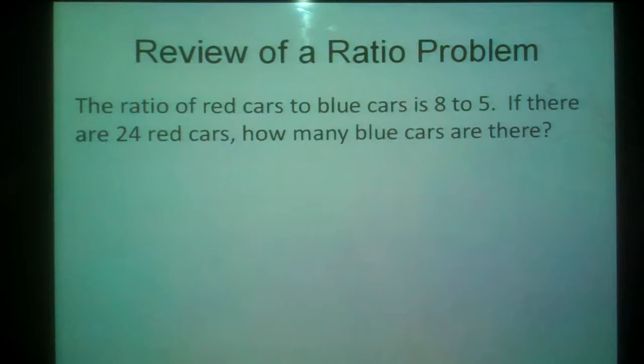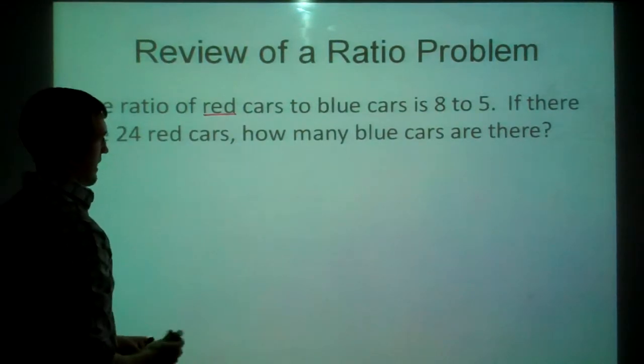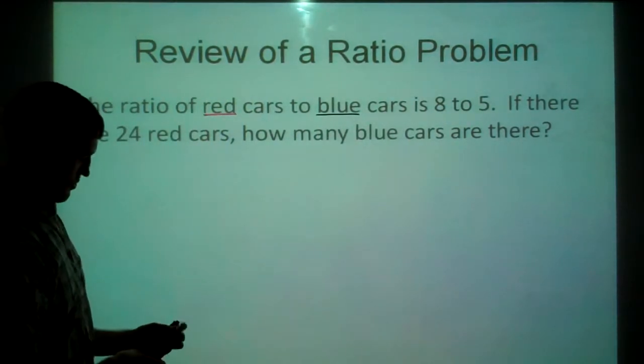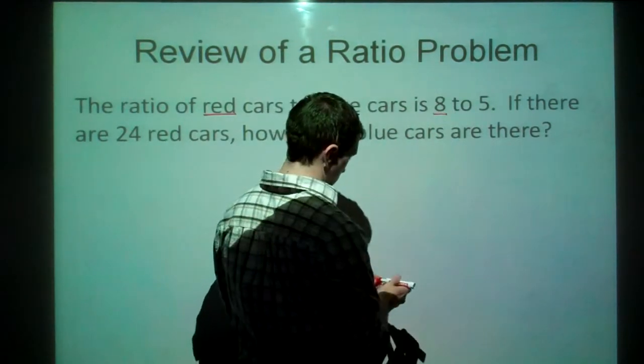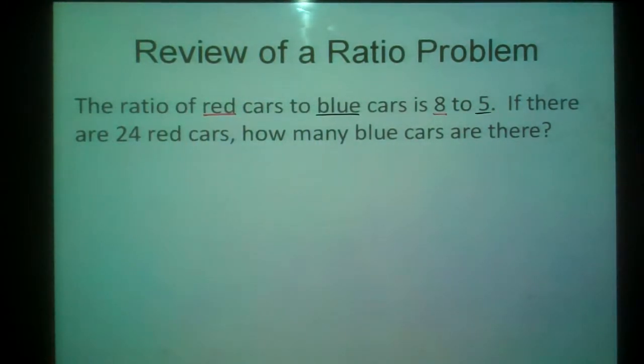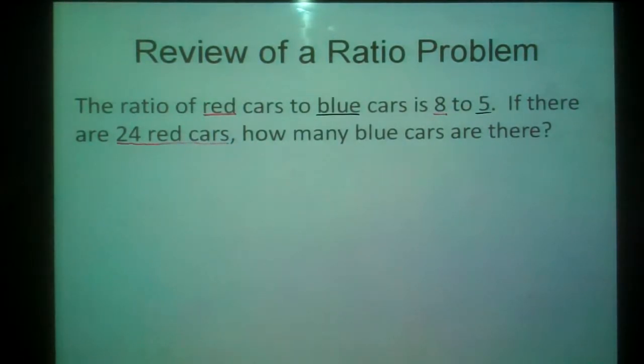Okay, the ratio of red cars to blue cars is 8 to 5. If there are 24 red cars, how many blue cars are there? I don't have a blue marker with me, but I do have a red. So let's see, we have red to blue. So we keep the order the same. That means the ratio of red to blue is 8 to 5. So just make sure we're keeping the order the same there. And the only other thing is we know that there are 24 red cars. So that's going to correspond to our 8.